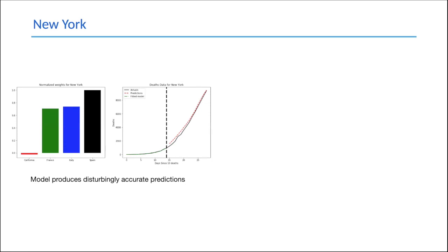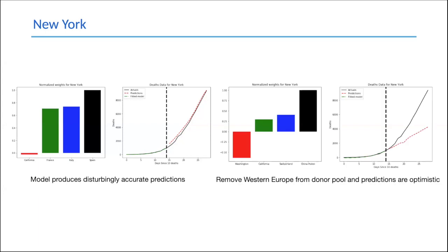Now I'll present some early results. For New York, this model is producing disturbingly accurate predictions — trained on 15 days, it predicts almost exactly where things go up to day 30. The donor pool is mainly Western European countries: France, Italy, Spain. If I remove those Western European countries and build another synthetic model, predictions become much more optimistic than actual data. Importantly, the training fit is near perfect in both cases, but with Western Europe included, predictions are accurate; without them, predictions are very optimistic.